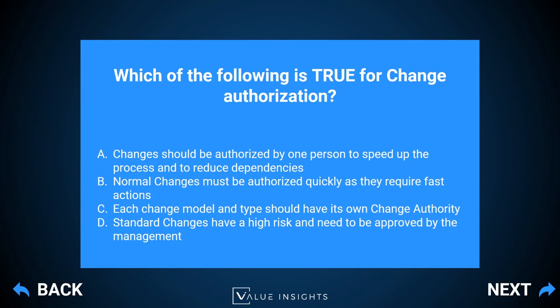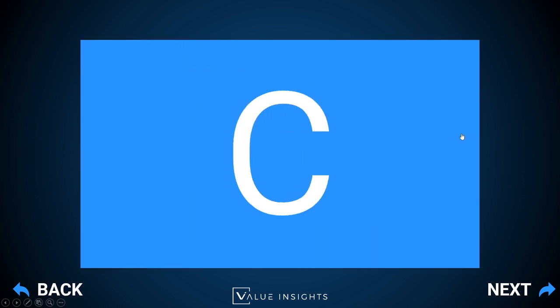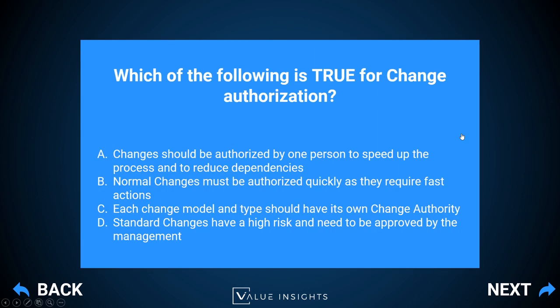Question eight: which of the following is true for change authorization? The correct answer is C: each change model and type should have its own change authority. The change authority is not a predefined person, but needs to be defined based on the type of change. For a more significant change, it might need a team like a change advisory board or IT management. For a small change, it might be a single person in the team. This reflects the concept of decentralized decision making promoted in agile methodologies.